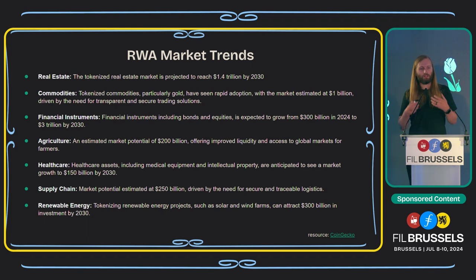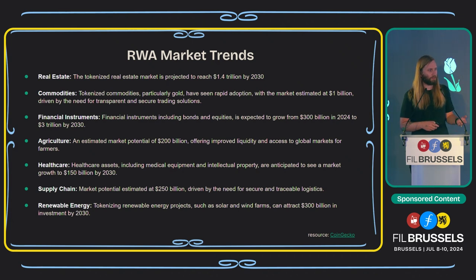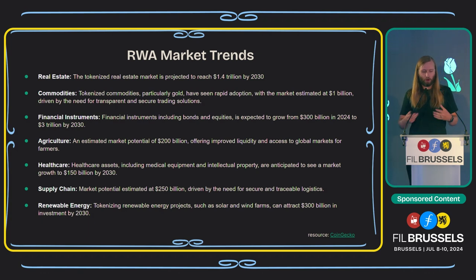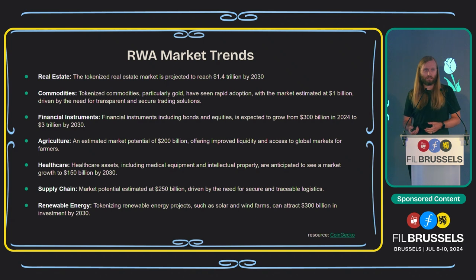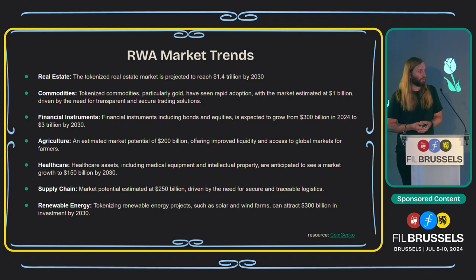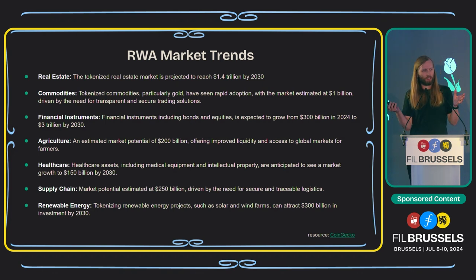Financial instruments — we're seeing bonds, equities, and money market funds — are expected to hit $300 billion this year in 2024 and $3 trillion by 2030. Agriculture has an estimated market potential of $200 billion in 2030 — having farmers who need access to liquidity to buy new machinery tokenize some of their crop yield, for example. Healthcare assets including medical equipment and IP are anticipated to hit a market of $150 billion by 2030. Supply chain is really close to Hedera's heart — Avery Dennison tracks about 150 transactions per second for supply chain movement globally, with a market potential around $250 billion.